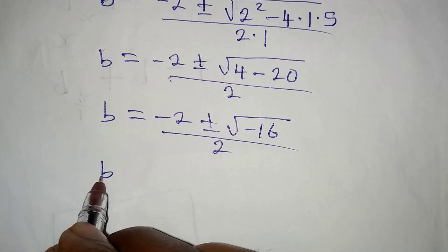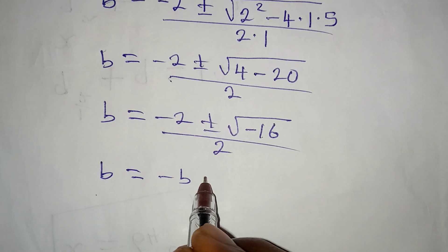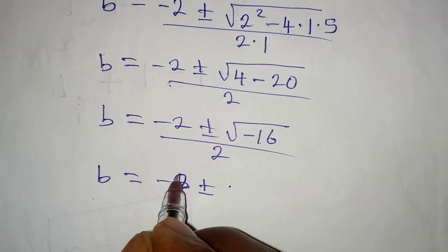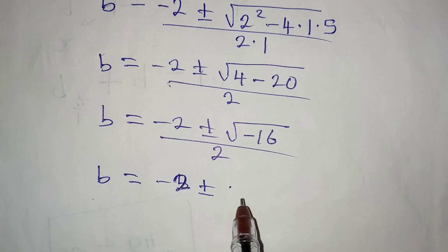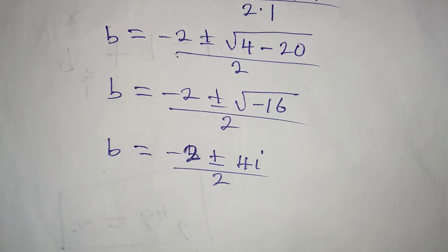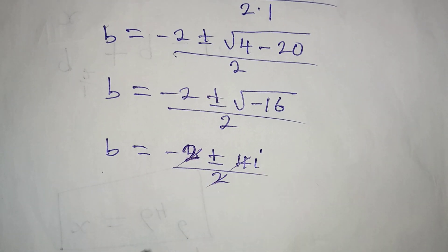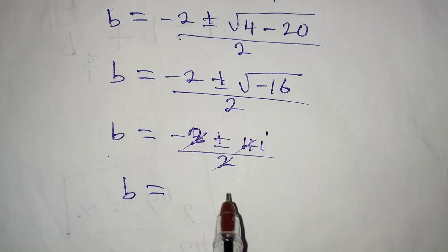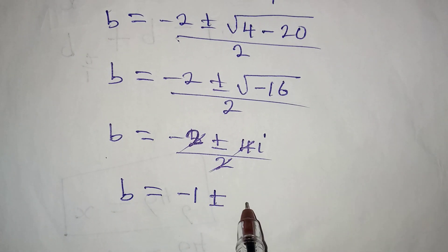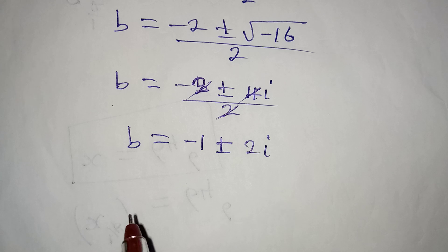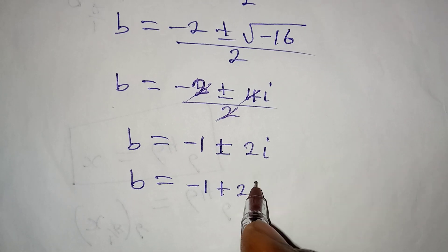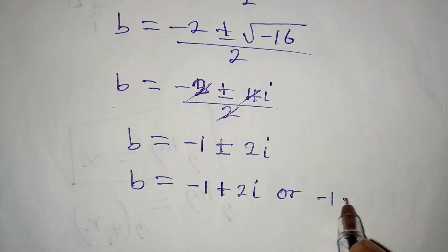The square root of negative 16 gives us 4i because of the negative, and this is still over 2. Dividing through by 2, minus 2 over 2 gives minus 1, and 4i over 2 gives 2i. So b equals minus 1 plus 2i, or b equals minus 1 minus 2i. These are the other two values of b.